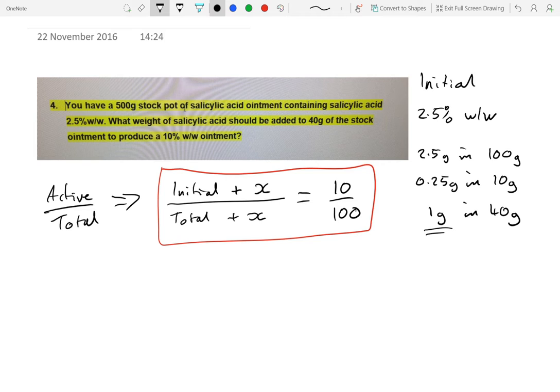So I'm ready now to say 1 gram of salicylic acid plus an unknown amount. And because I'm making a formula, I actually won't use the units because all the units are grams. Then 40 grams is the weight of the stock ointment, but then it will increase when we add some salicylic acid. And that will be equivalent to 10 grams of active over 100 grams of total, and that's what we're working with.